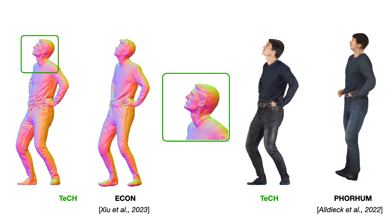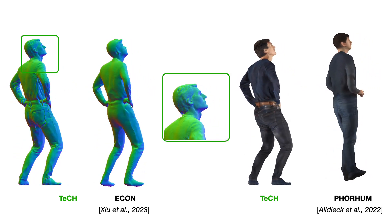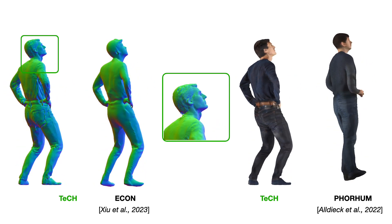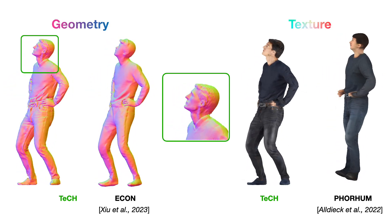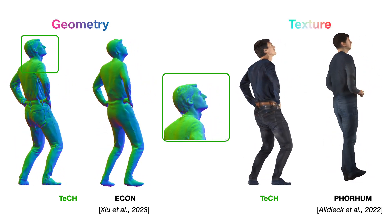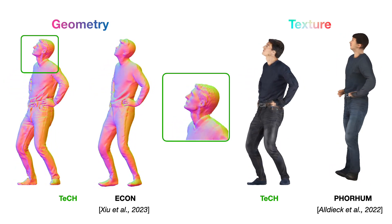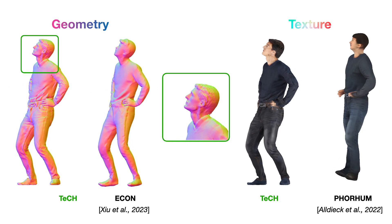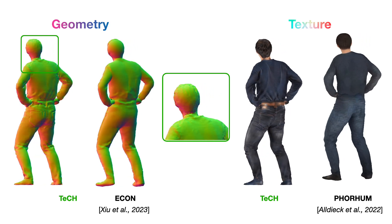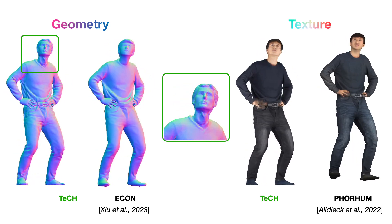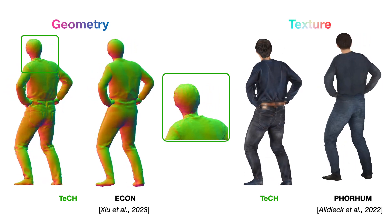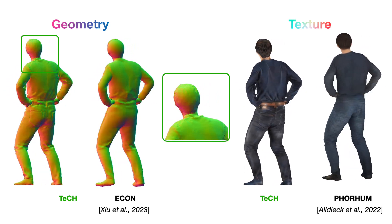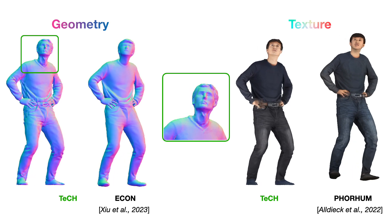Here we select the strongest competitors, Econ and Forhum, based on their superior quality in recovering geometry and texture. TEC outperforms them both and reconstructs very lifelike 3D clothed humans. Lifelike refers to a detailed full-body geometry, including facial features and clothing wrinkles in both frontal and unseen regions, and a high-quality texture with consistent color and intricate patterns.